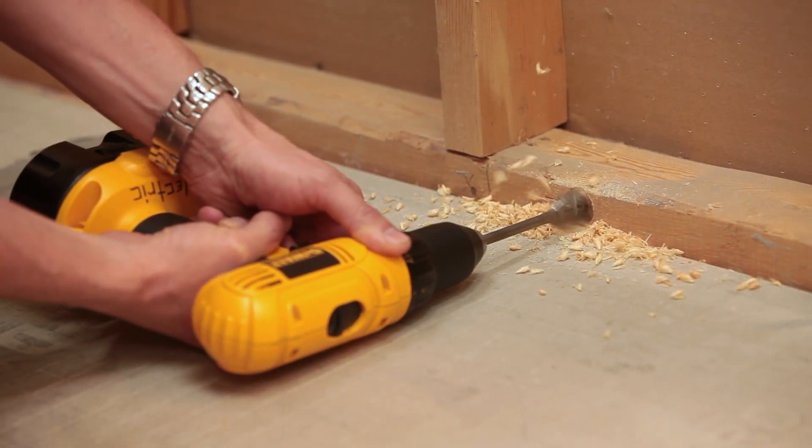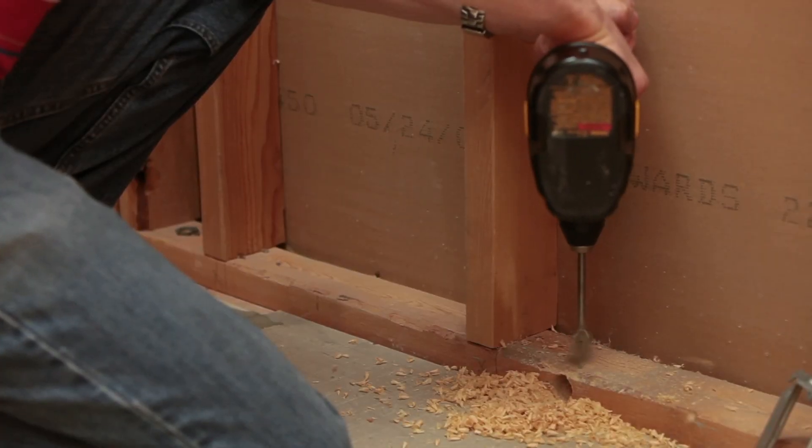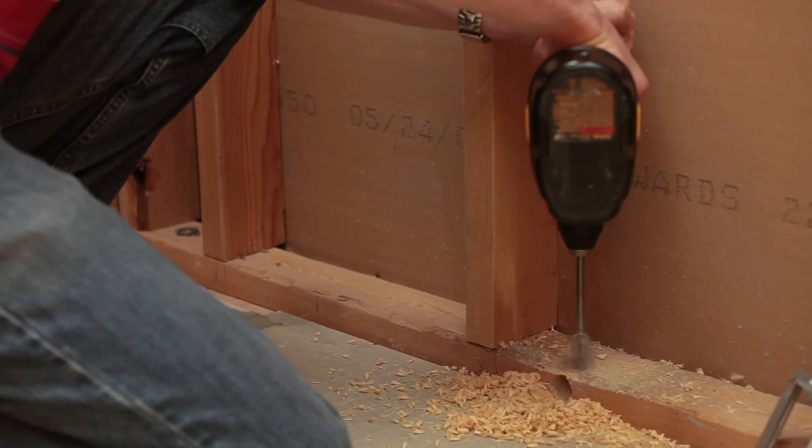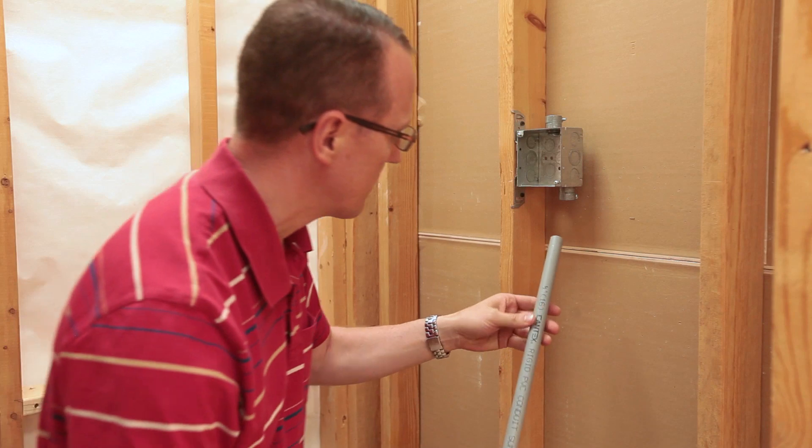Chisel or drill holes for the power lead and the sensor wire in the front and top of the bottom wall plate. If conduit is required, ensure the holes are large enough to fit.